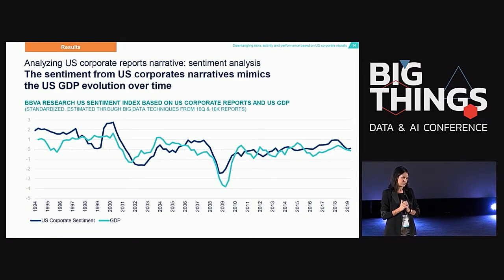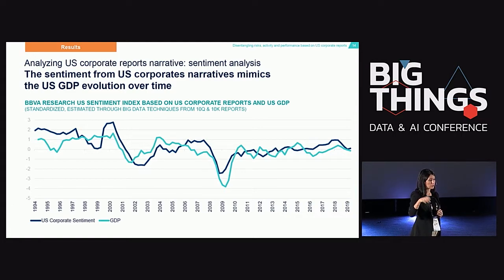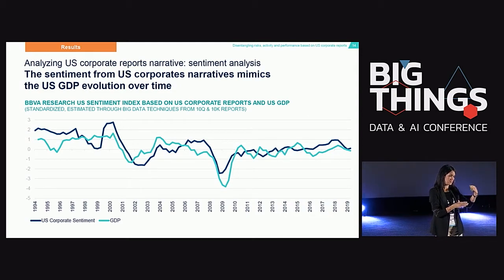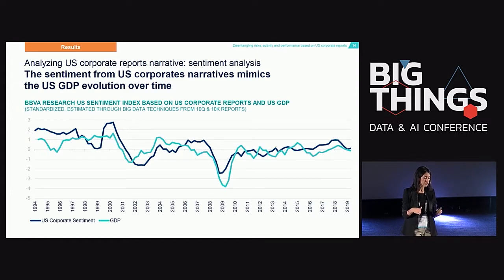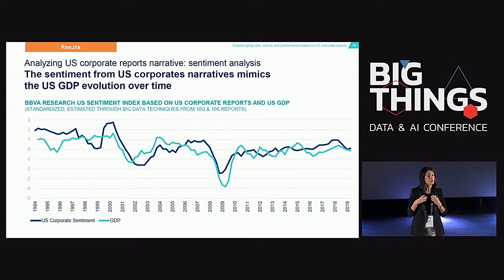Here you can see our results. This is the evolution of US GDP compared with a new indicator — the sentiment of US corporate reports' narrative. We have all this unstructured data, we apply natural language processing techniques and sentiment analysis, and at the end of the day we have an indicator that evolves over time. The correlation is higher than 60%. So from unstructured data where we don't have anything, we construct an indicator that replicates economic activity.